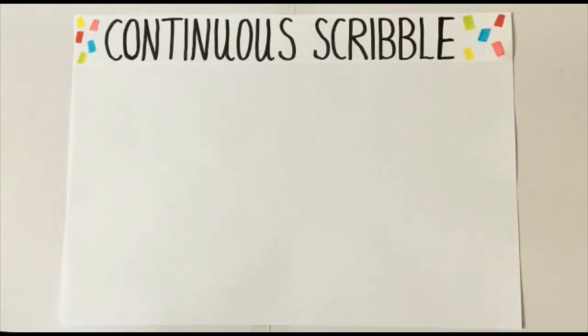Continuous Scribble. For this activity you'll need a large piece of paper. When you've done it a few times you can move on to a smaller piece of paper like this one and this will make it harder. You also need your eyes closed so that you can really focus on the feel of your pen or pencil.